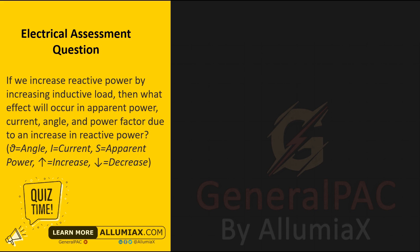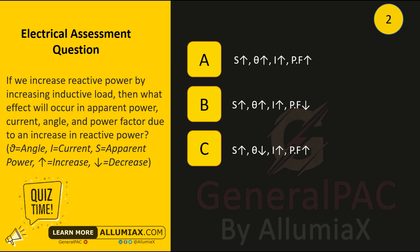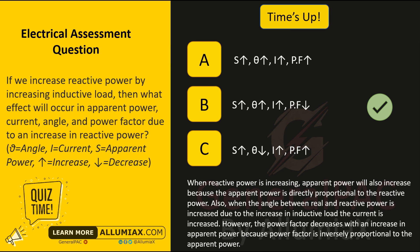If we increase reactive power by increasing inductive load, what effect will occur in apparent power, current, angle, and power factor? The answer is B: Apparent power increases, angle increases, current increases, power factor decreases. When reactive power is increasing, apparent power will also increase because apparent power is directly proportional to reactive power. When the angle between real and reactive power increases due to the increase in inductive load, the current also increases. However, the power factor decreases with an increase in apparent power because power factor is inversely proportional to apparent power.